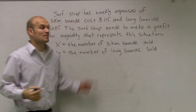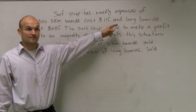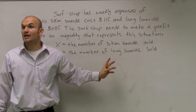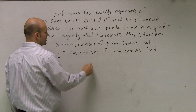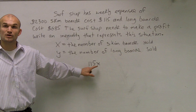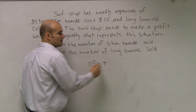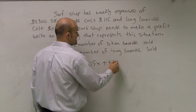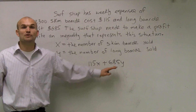When they sell a skim board, how much money do they make? $115. When they sell a long board, they make $685. So we can represent that by saying 115x — for every skim board they sell, they get $115. Then plus 685y for the long boards they sell. So that is what we call their revenue — that's what they're bringing in.